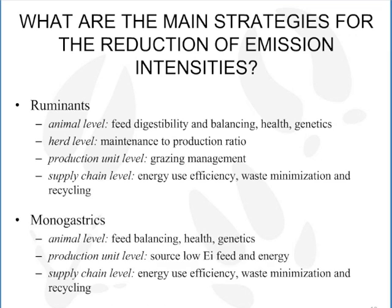For monogastrics, at the animal level it is again feed balancing, health, and genetics. At the production unit level, sourcing low emission-intensity feed and energy is significant. And at the supply chain level, we again found energy use efficiency, waste minimization, and recycling to be the key mitigation levers.